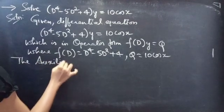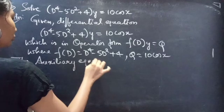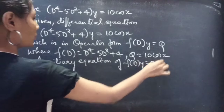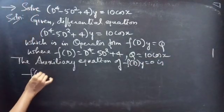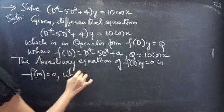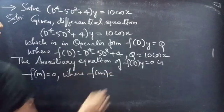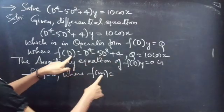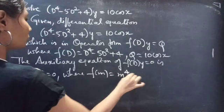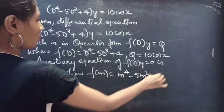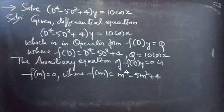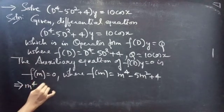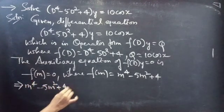The auxiliary equation of f(D)·y = 0 is f(m) = 0, where f(m) is obtained by replacing the differential operator D with m. We have f(D) = D⁴ − 5D² + 4, so f(m) = m⁴ − 5m² + 4. Our auxiliary equation becomes m⁴ − 5m² + 4 = 0.